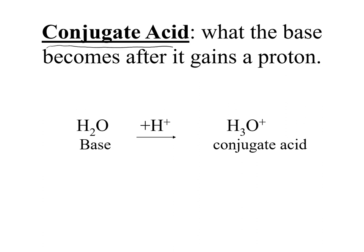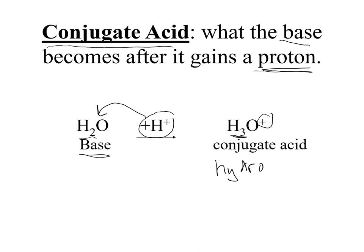Conjugate acid is what your base becomes after it gains a proton. For example, if my base was water, the hydrogen ion is accepted by the base. Water has two hydrogens; adding one more gives three hydrogens — H3O. It was neutral; adding an H+ makes the charge positive. We end up forming our hydronium ion, which is our conjugate acid. So the conjugate acid is what the base becomes after it gains a hydrogen ion.